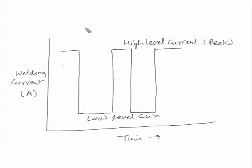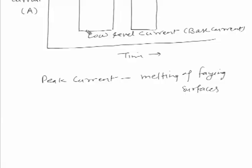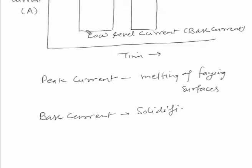The purpose of the peak current is to make sure that sufficient heat is generated during welding — the peak current develops a lot of heat, which is mainly used for melting the faying surfaces. The base current develops less heat, and during this low temperature period solidification of the weld metal takes place. How long melting and solidification occur is governed by the duration of the peak current and the duration of the base current.